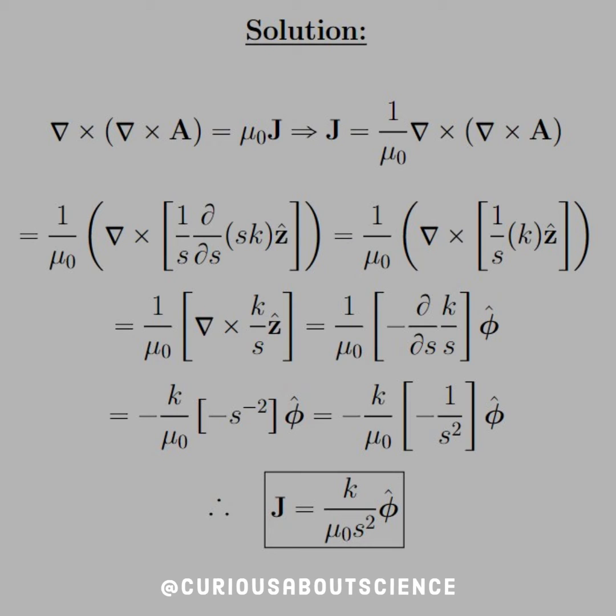Okay, so apply the first curl to A, where we have 1 over S partial S. Again, if we look in the book, we'll know that the form has S times the component of the vector, which is just k here, and we know that it results in the z hat direction, so we just gotta simplify it through with the derivative. And we see that we end up with k over S in the z hat.